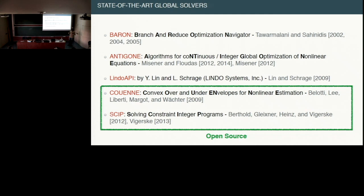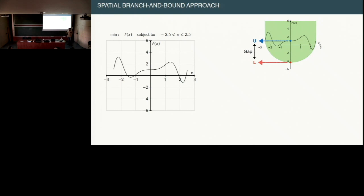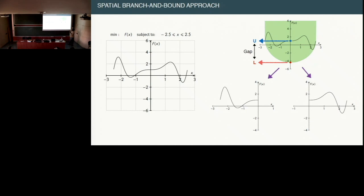The idea of spatial branch and bound is fairly simple: given a non-convex function within a given domain, you find the best upper bound, apply a convex relaxation to get a lower bound, and evaluate the gap. If the gap is within user-defined precision, we have the global optimum. Otherwise, we perform spatial branching on the variable — branching at the origin gives two separate regions with separate convex relaxations. The smaller the regions, the tighter the convex relaxations, and the easier it is to prune and approach global optimum.